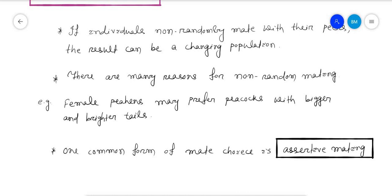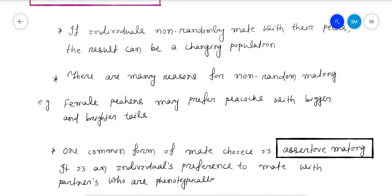Now, what is assortive mating? Assortive mating is an individual's preference to mate with partners who are phenotypically similar to themselves.